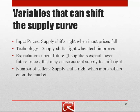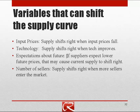Expectations about the future — in particular, future prices — also matter. If suppliers expect future output prices to be lower than they are now, that will tend to cause the current supply curve to shift right, because they would rather sell now for the comparatively high price than tomorrow for the relatively low price. As with demand, the strength of this effect depends upon how storable the good is. If the good is storable, this effect will be fairly strong; if the good is perishable or an intangible service, this effect will be pretty weak if present at all.